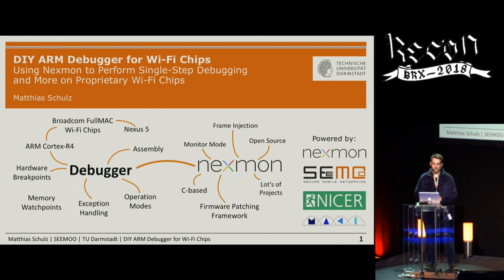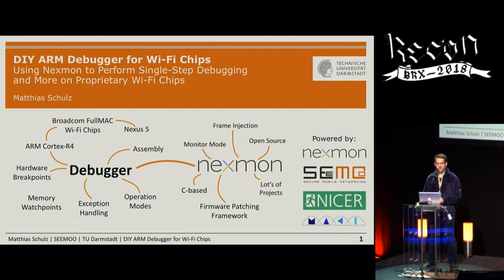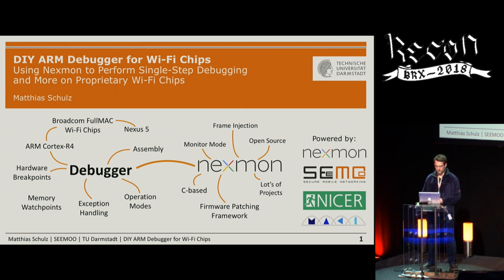To patch those Wi-Fi chips, Daniel Wegemer already introduced the Nexmon framework — a C-based firmware patching framework developed especially for patching Wi-Fi chips, but it can also patch firmware for other devices. At the end I will briefly introduce it so you have an idea about it.